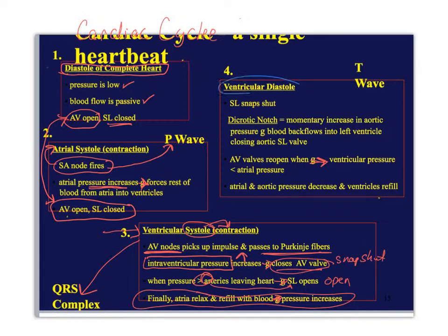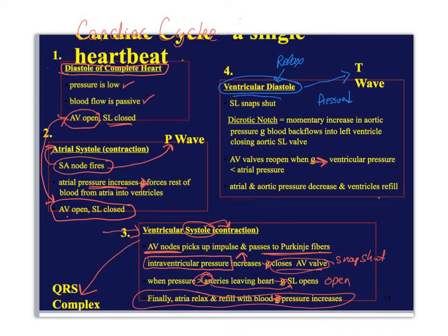Now we get to ventricular diastole — the relaxation phase. As the membrane repolarizes, it creates a bump on your EKG that we call the T wave. The pressure is going down in the ventricles, so now the pressure in the aorta and pulmonary trunk is greater, causing the semilunar valves to close. When that happens, a little bit of blood backflows — we call that the dicrotic notch. As ventricular pressure drops, the AV valves also reopen, and we have passive filling of the atria and ventricles all over again. Then you start the whole cycle over.